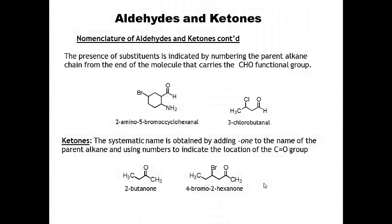Quickly, aldehydes and ketones — this is some straightforward nomenclature. If you have a cyclic aldehyde, the aldehyde is your main functional group and all other substituents are named based on it as the parent. So here this is 2-amino-5-bromo-cyclohexanal — you end the name in '-al' to indicate the aldehyde is present. This example would be 3-chlorobutanal, where '-al' is the suffix on the parent name.